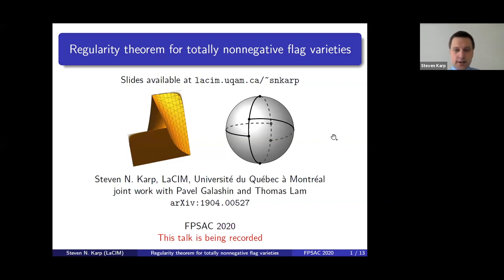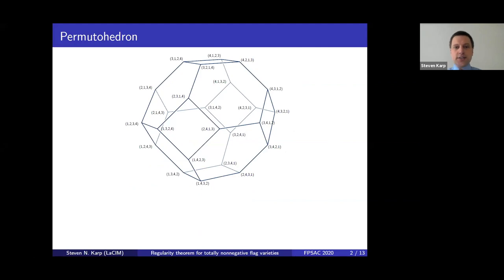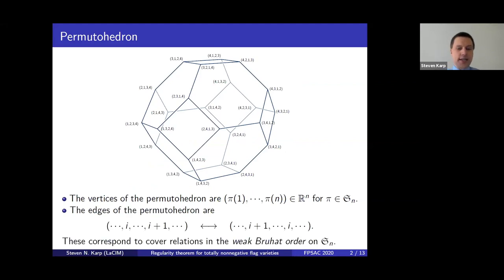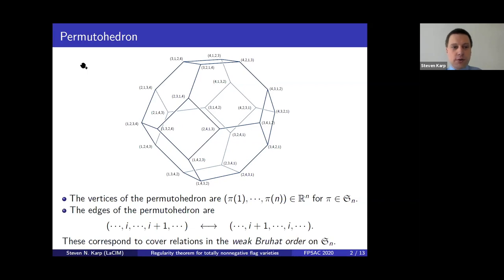I'd like to motivate our result via an analogy with the permutahedron. This is a polytope whose vertices are all permutations of the vector 1, 2, 3 up to n. So its vertices correspond to elements of the symmetric group Sn. Its edges are given by taking a vertex and switching two consecutive numbers i and i+1, which are the cover relations in a poset called the weak Bruhat order on the symmetric group.